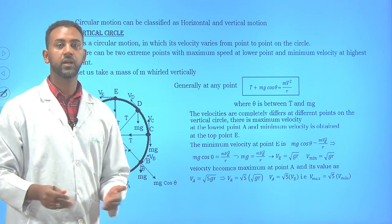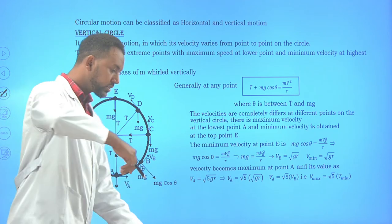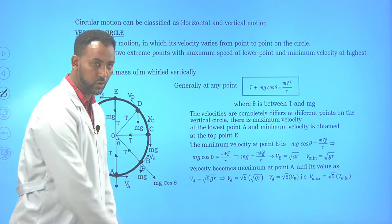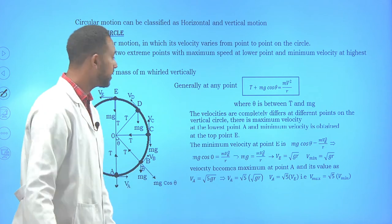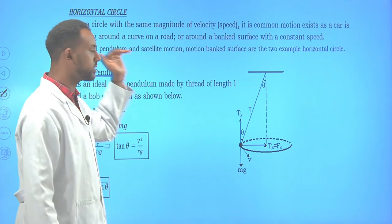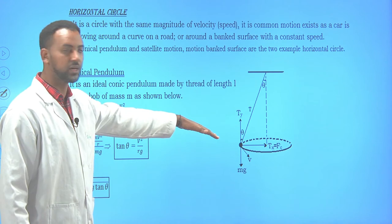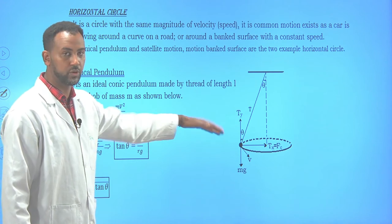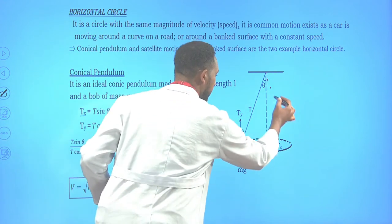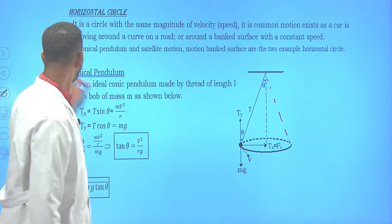But if you hold it and make a cone shape like this, it is called a horizontal circle or conical pendulum. Sometimes it is called a conical pendulum because it forms like a cone. So that is called a conical pendulum.